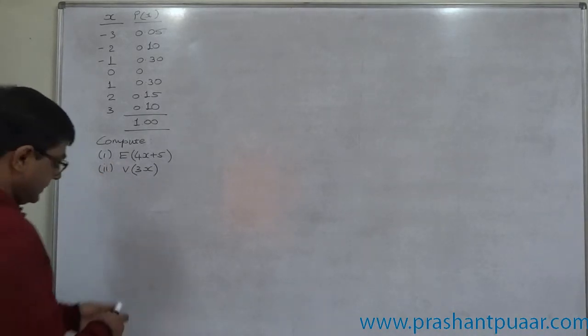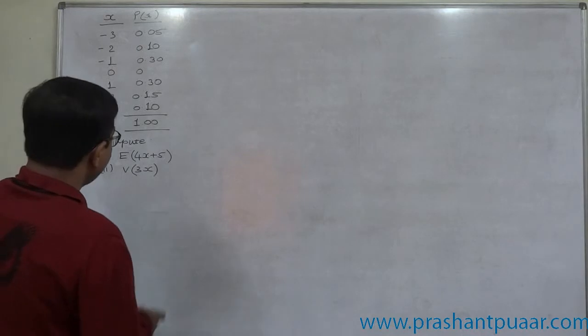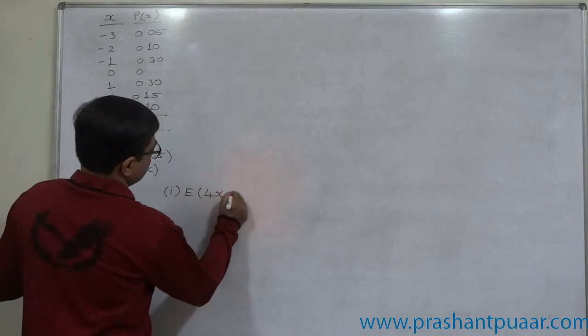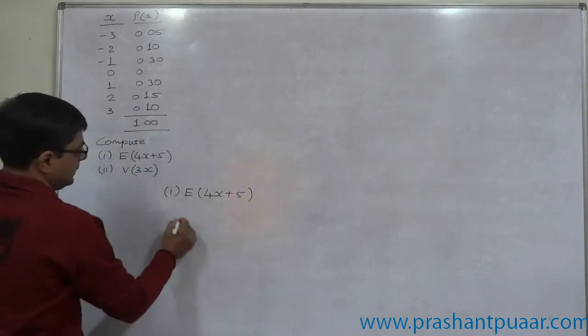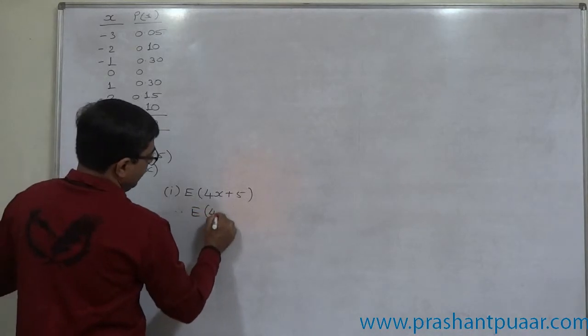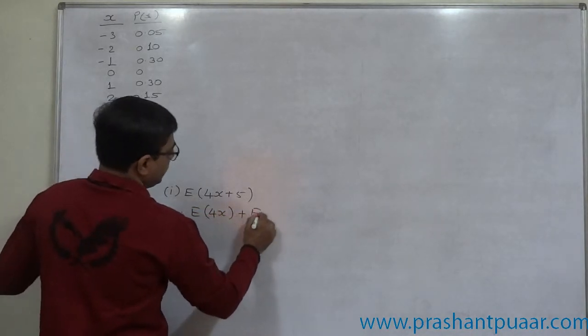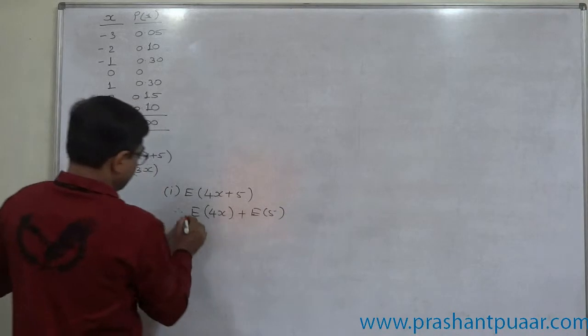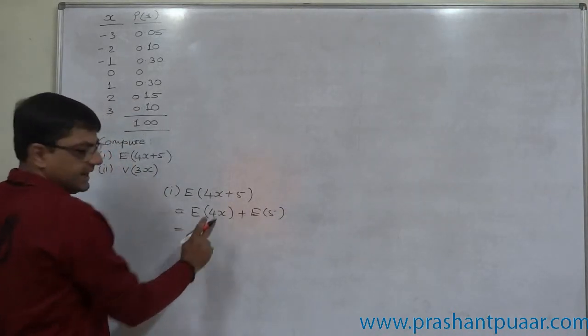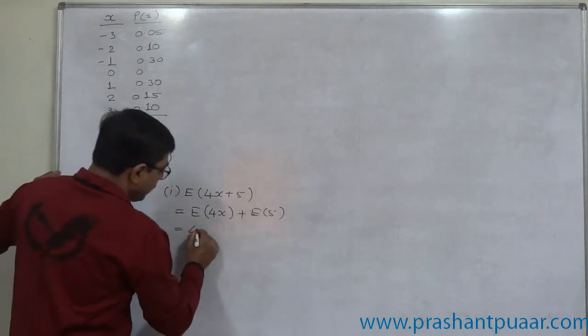First of all, let us understand what do we mean by E of 4x plus 5. If we open the bracket, it is E of 4x plus E of 5. That means E of 4x is nothing, it is 4E of x.